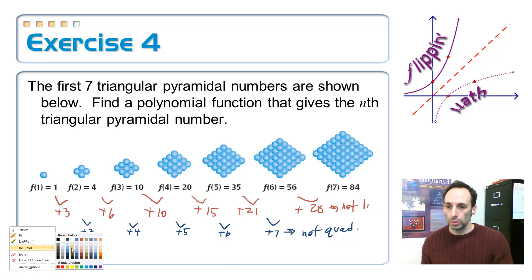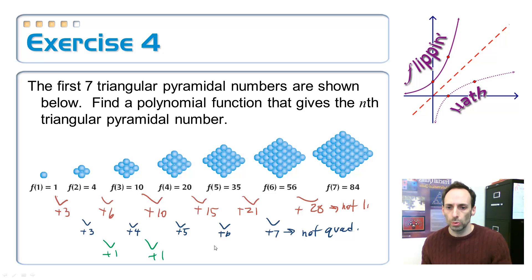Keep going. Let's find the differences between those differences. Plus 1, plus 1, plus 1, and plus 1. Since those are constant, this indicates that it must be a cubic polynomial function.